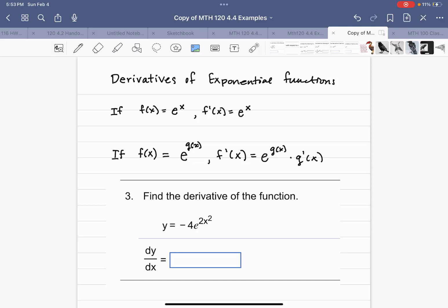Example number three, find the derivative of the function y equals negative 4e to the 2x squared.